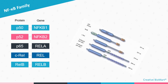Structurally, they all have an N-terminal RL homology domain responsible for their binding to DNA and dimerization. In addition, protein 65, CRL, and RL-B have a transcriptional activation region that positively regulates gene expression. Protein 50 and protein 52 do not have transcriptional activation regions, and their homodimers can inhibit transcription.